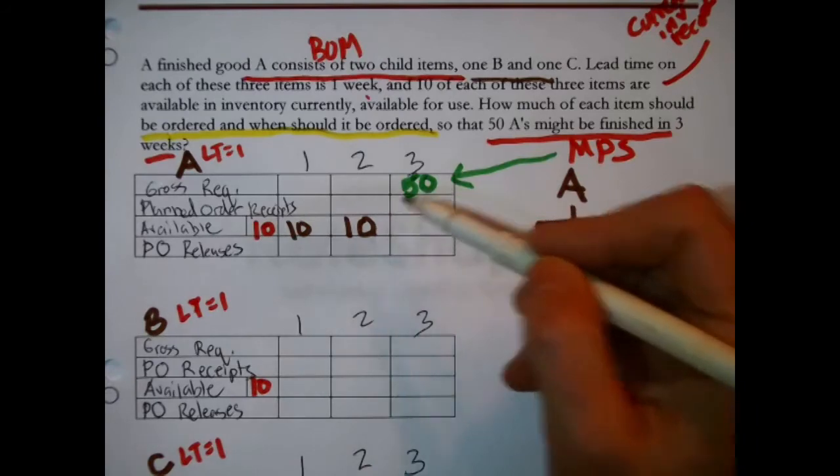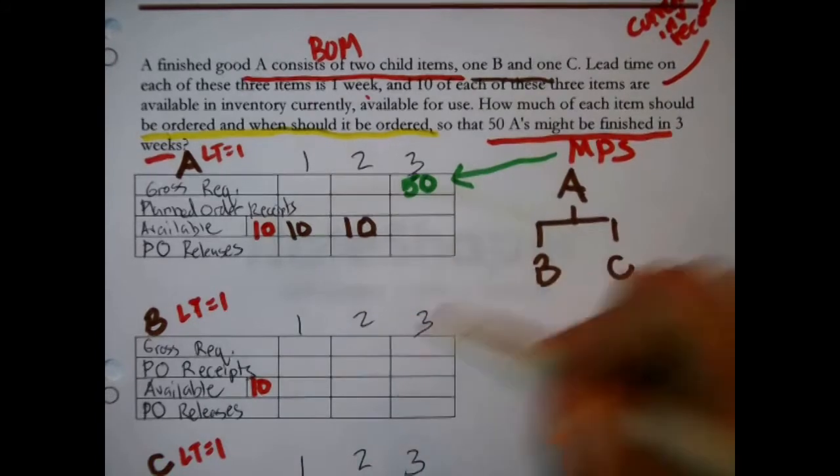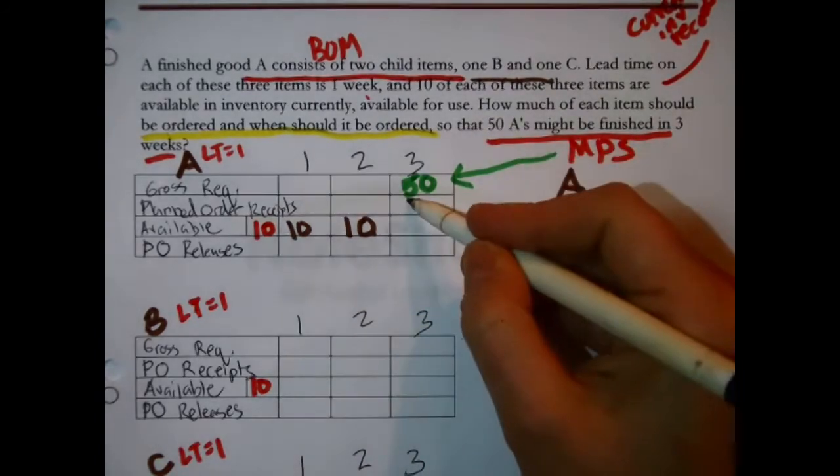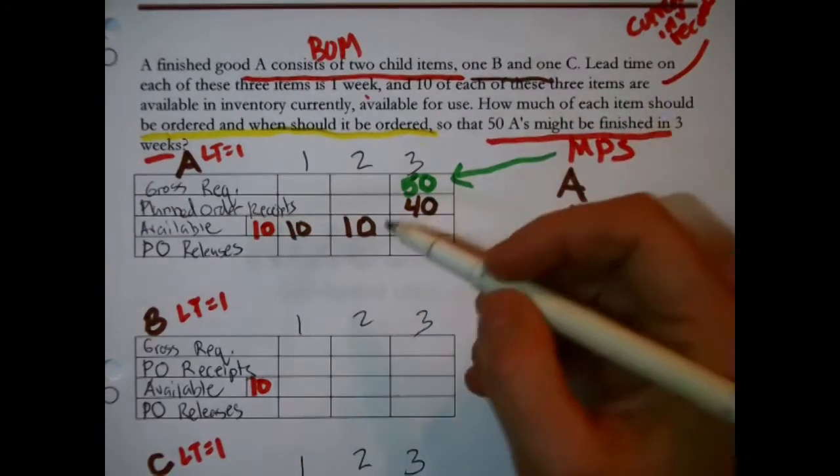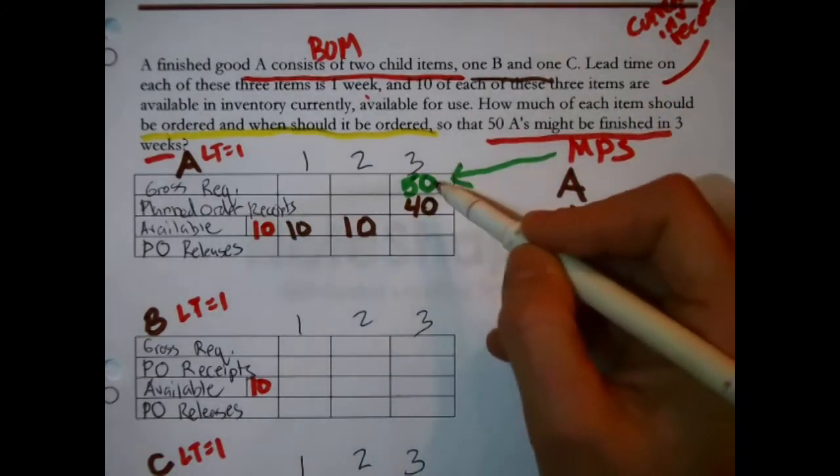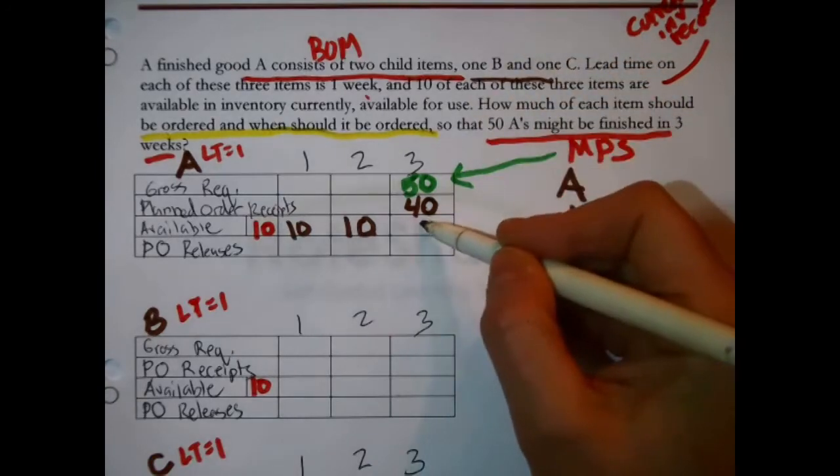We just carry those ten in stock so we have them with us going into this third week. We are fifty minus ten forty shy. They didn't say anything about lot sizes. That means I am free to neatly arrange to receive forty right when I need them.